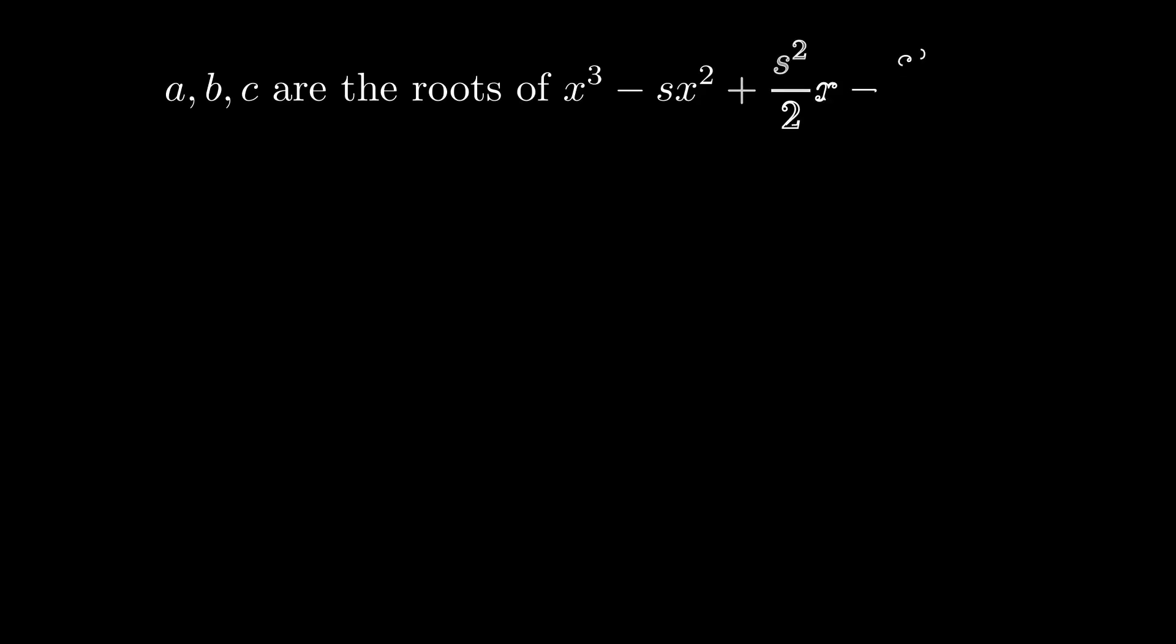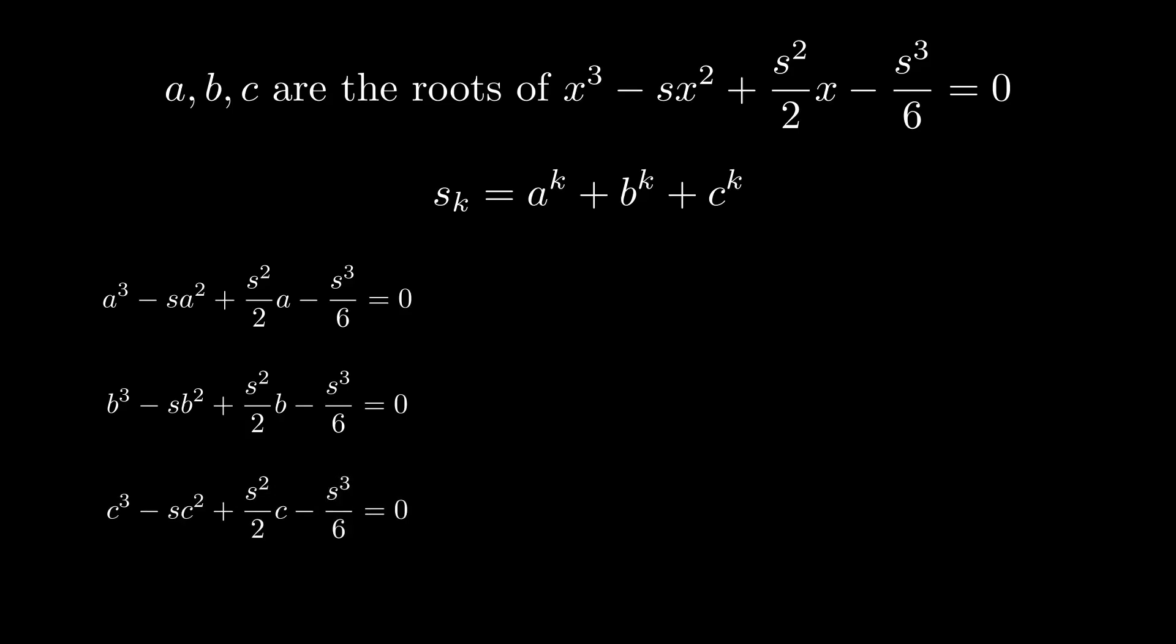Let's call the sum of A to the K plus B to the K plus C to the K as SK. Since A, B, and C are roots of the polynomial, substituting each of them into the polynomial will result in zero. Now, let's multiply the equations by A, B, and C, respectively, and add them together. This method is known as Newton's sums.